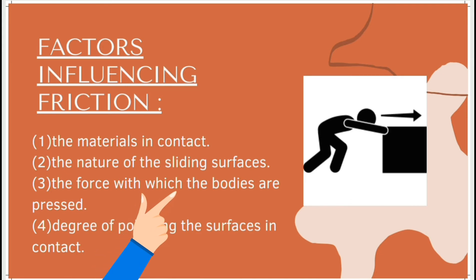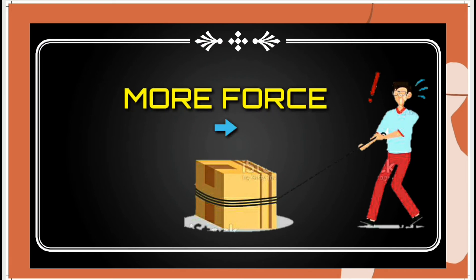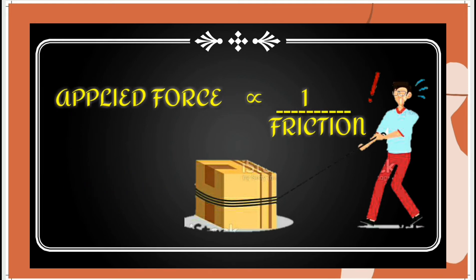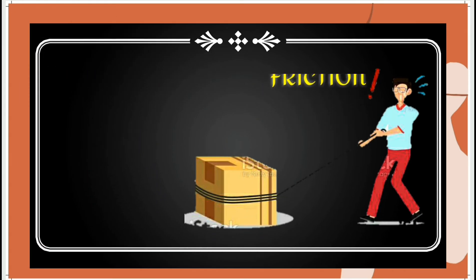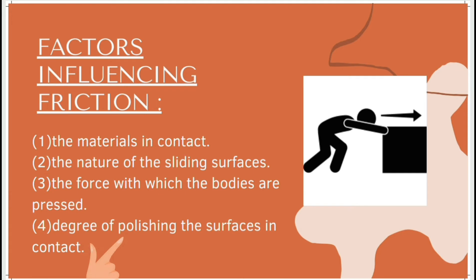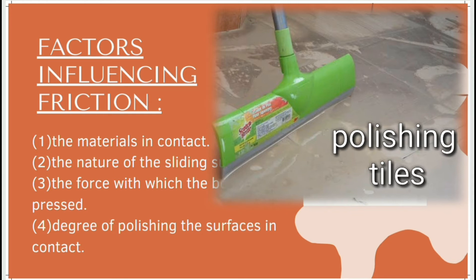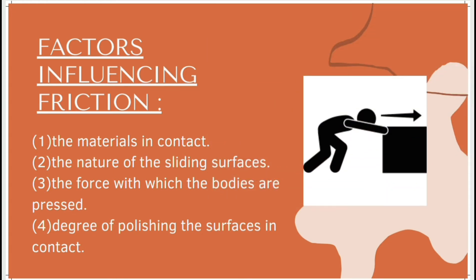The third factor is the force with which the bodies are pressed. If we are applying more force, the object will move a greater distance — the applied force is inversely proportional to friction. If we are applying more force, friction will be less; if we are applying less force, friction will be more. Another factor is the degree of polishing of the surfaces in contact. If the surfaces are more polished, they will move easily. Polishing decreases irregularities — if irregularities are decreased, there are fewer ups and downs, and friction will automatically be less.